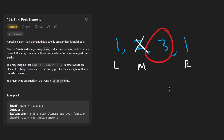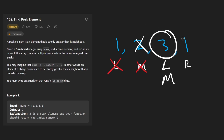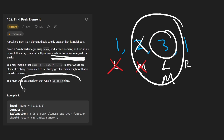Once you understand the intuition it does make a lot of sense. Wrapping up the binary search: we shift the left pointer to mid plus one, recalculate mid as left plus right divided by two, and check if the new mid is the peak element by comparing to its left and right neighbors. If it is, we return the index. Since this is binary search, it runs in O(log n) time and constant memory.